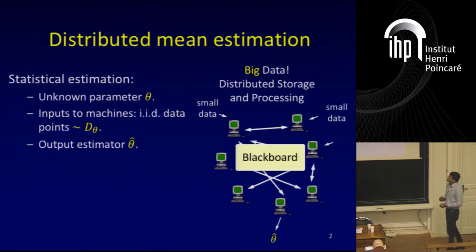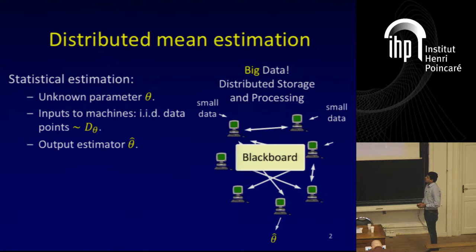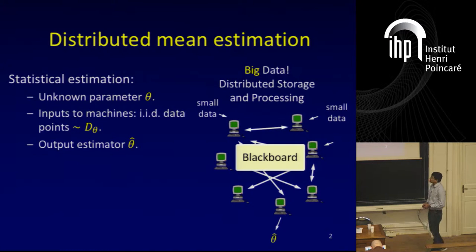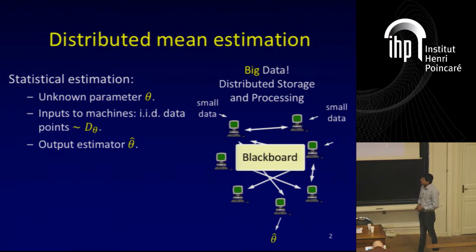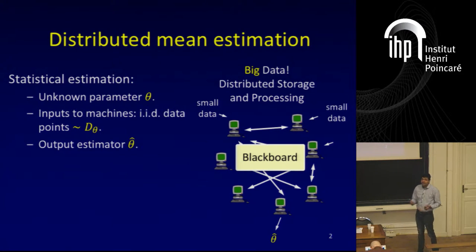We are interested in statistical estimation problems. There is an unknown parameter theta, and the inputs to various machines are IID samples from a distribution parameterized by theta. The goal of the machines is to run this communication protocol and finally output an estimated theta-hat for this parameter theta.